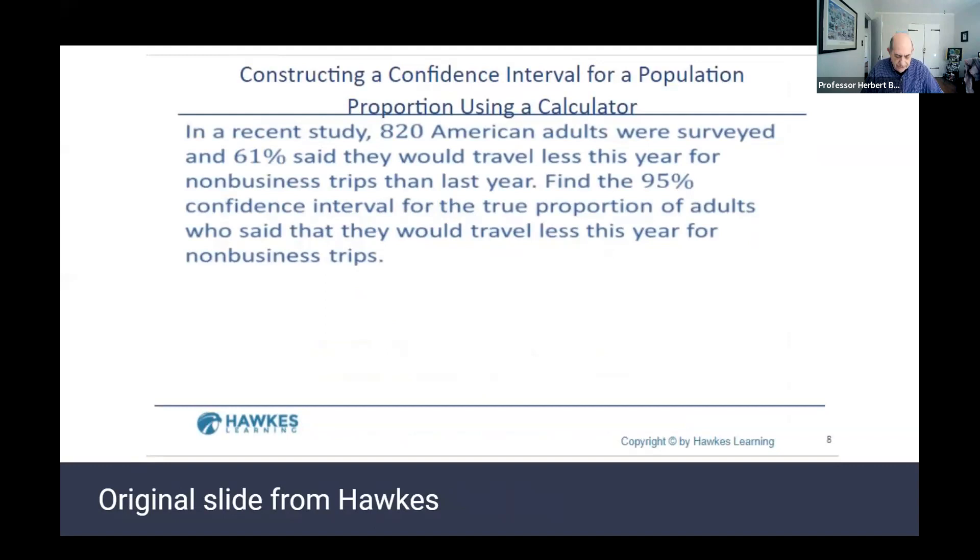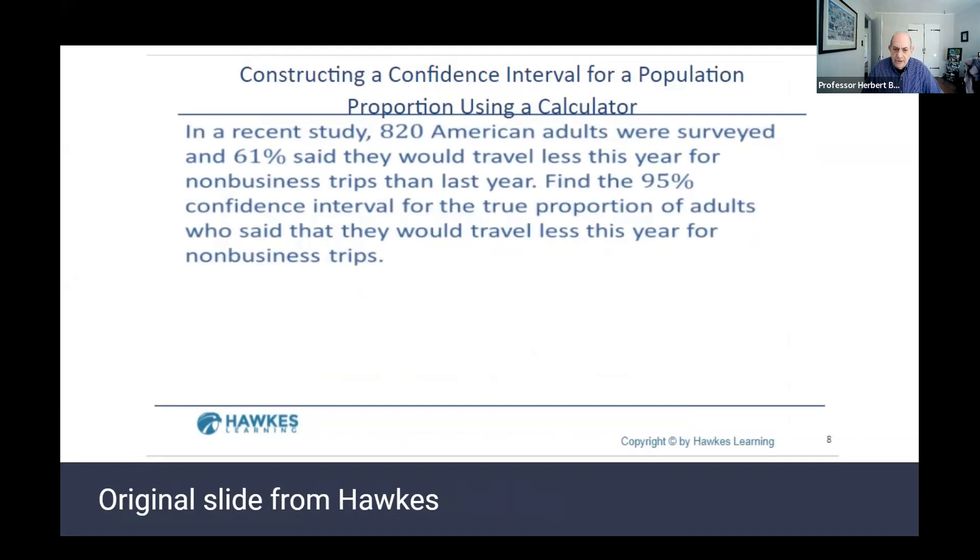So here's another slide from Hawks. And what I've done after this is here's what Hawks has put up. We want to find the true proportion of adults who said that they would travel less this year for non-business trips. And to use their calculator, I laid out for them, you need the N, X, the number with the property that is a success and the level of confidence. So the question I asked them is, we have N, C and P, how can I find X?